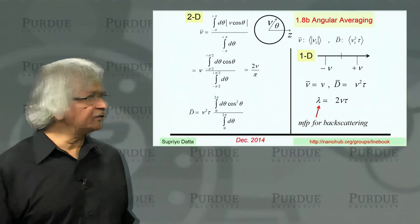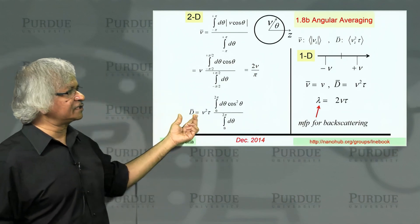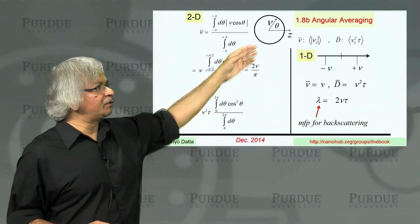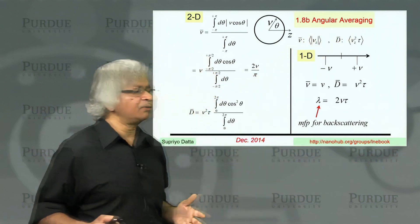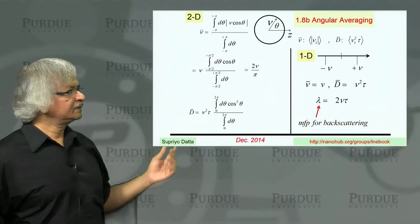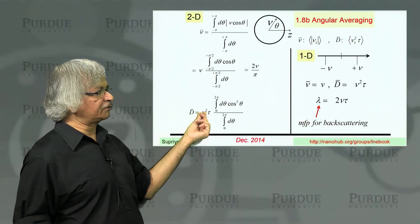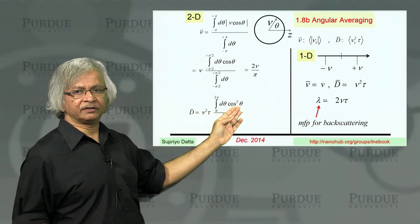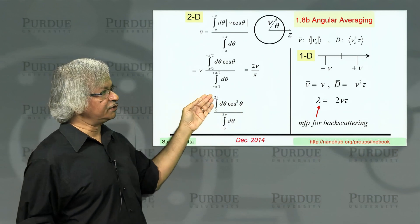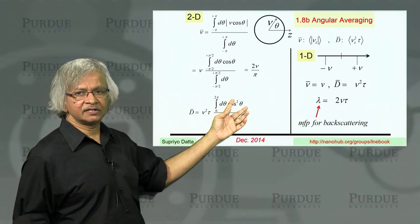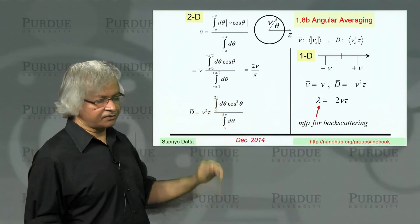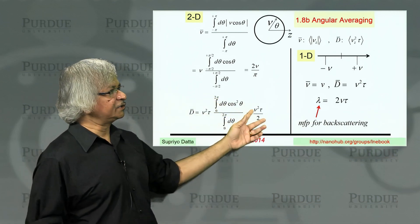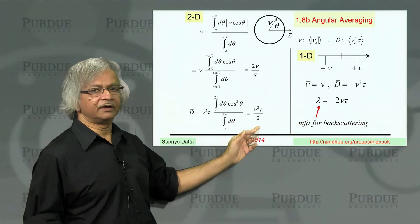What about the diffusion coefficient? Well, now the average that is involved is vz square tau. That one again. What's vz square? Well, that's v square cosine square theta. So I've pulled the v square out of the integral and left the cosine square theta in there. So what you have to do is integrate d theta cosine square theta divided by d theta. And again, this is a straightforward integral. And the answer you'd get is v square tau divided by 2.